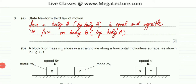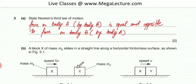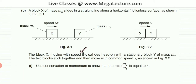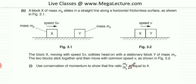Moving to part B of the question: block X of mass MX slides in a straight line across a horizontal frictionless surface. Block X has a velocity of 5V, and there is another object of mass MY. Block X, moving with speed 5V, collides head-on with the stationary block of mass MY. The two blocks stick together and move with a common speed V. We need to use conservation of momentum to show that the mass ratio MY over MX equals 4.